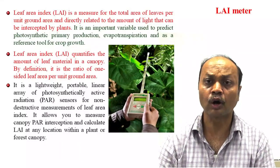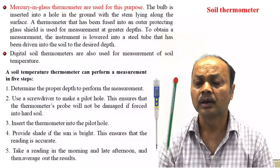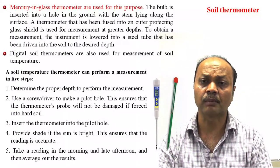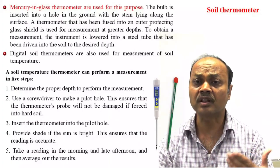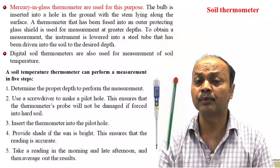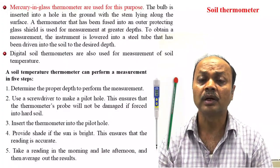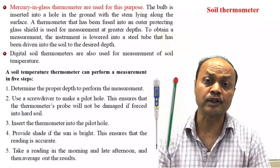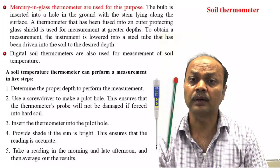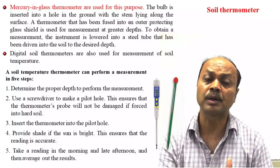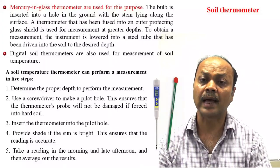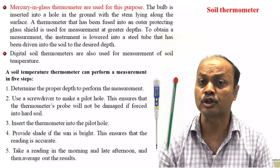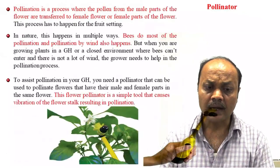A soil thermometer is used because soil temperature is one of the vital components. It is mercury-based and nowadays digital thermometers are also used. You can know the maximum and minimum soil temperature in a particular time frame, similar to air temperature. Not only air temperature but soil temperature is also very important.